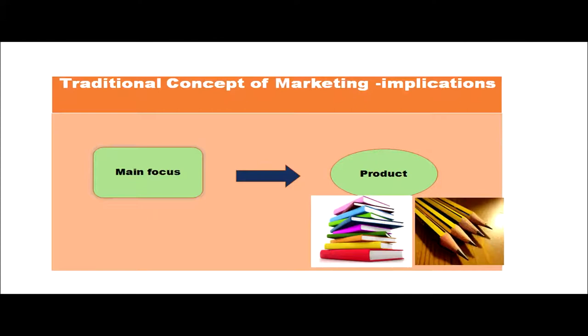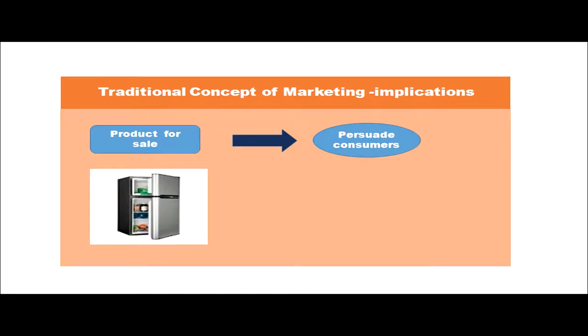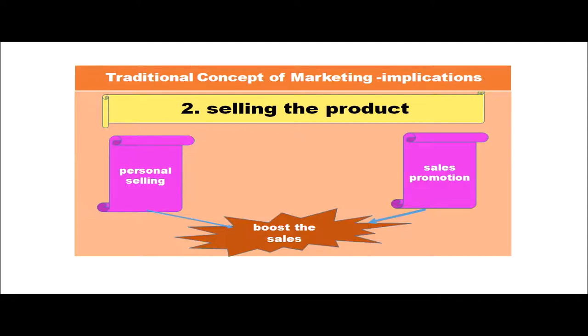Let's see the traditional concept of marketing. In the traditional concept, the main focus is on the product — whatever has been produced, that has to be sold. For example, if a refrigerator has been manufactured, the production has already happened and we persuade consumers to buy the product. Selling the product happens through personal selling and sales promotion activities. Personal selling means sending people door to door, having personal interaction, helping consumers understand product features, and clarifying queries.